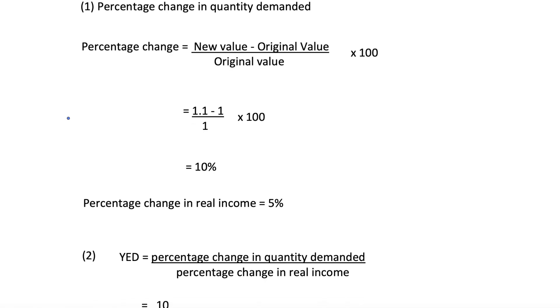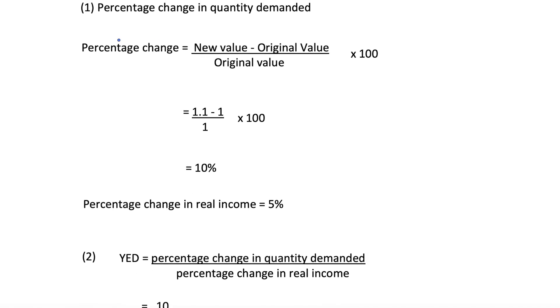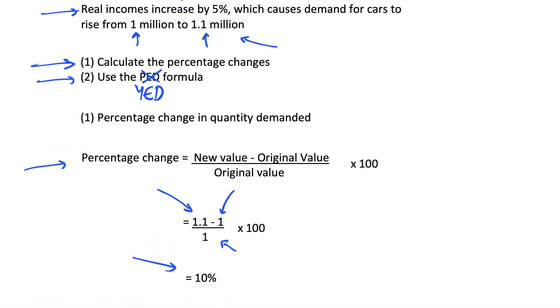So first, percentage change in quantity demanded. We know our equation for calculating percentage changes. Our new value of demand for cars is 1.1 million, our original was 1 million. We could just spot that our increase in demand for cars was 10%, because it went from 1 million to 1.1 million, so this was just a 10% increase in quantity demanded.